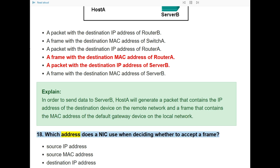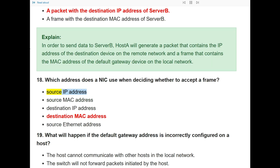Question 18: Which address does a NIC use when deciding whether to accept a frame? The answer is the destination MAC address.